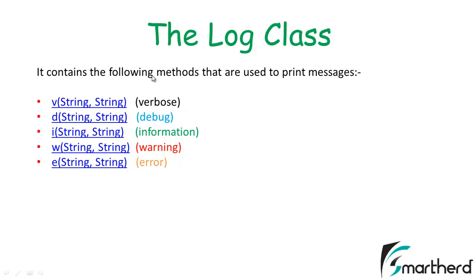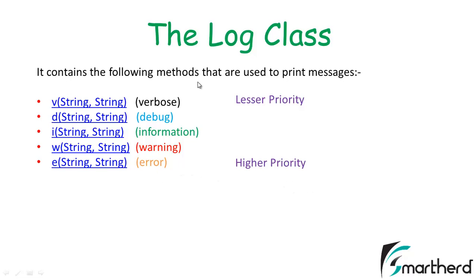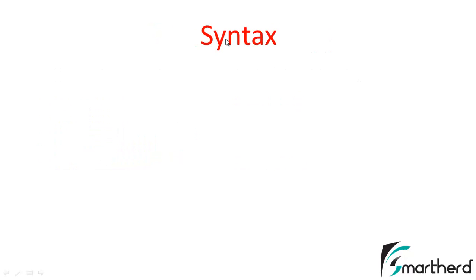When you print log messages using these methods you will get a corresponding color output. If you are using the verbose method the output will be printed in black color; if you are using the information method the output will be printed in green color, and so on. Verbose is of very low priority and error is of very high priority, so the priority level increases from verbose up to error.